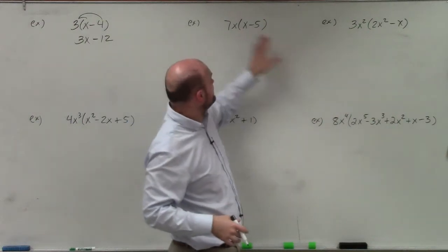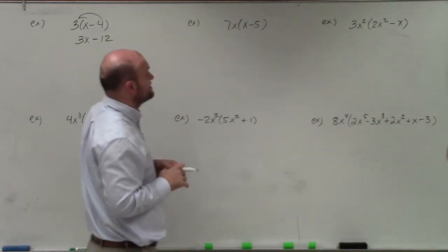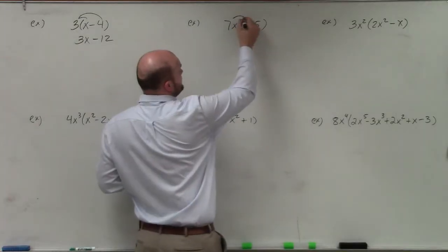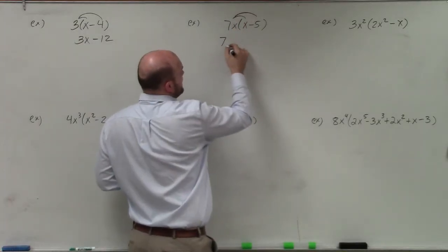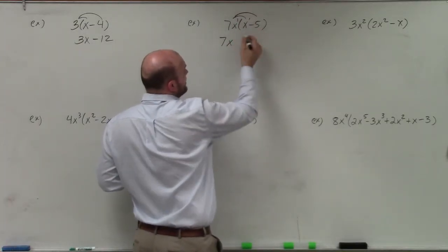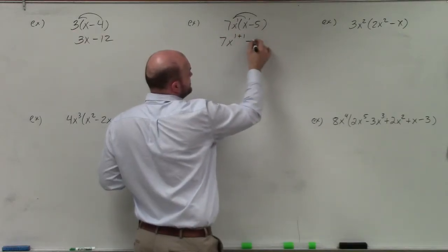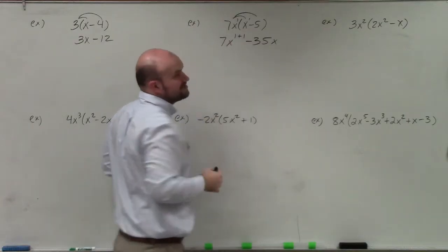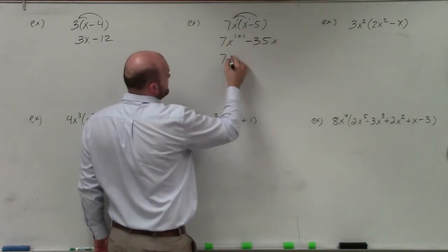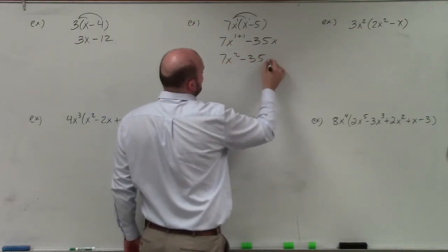In this case, I have 7x times x minus 5. Again, just going to distribute, so therefore I have 7 times x. Now again, these powers are 1 and 1, so that's 1 plus 1. And then I have 7x times negative 5, which is going to be negative 35x. Well, 1 plus 1 is 2, so therefore it's 7x squared minus 35x.